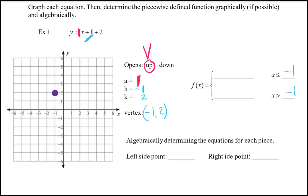Now let's graph this. My a value is one, so I'll have two slopes: positive one on the right and negative one on the left. On the right-hand side I go up one, over one, and plot those dots. Because an absolute value graph is symmetrical, I use the same movement on the other side — up one, left one, repeatedly — and then connect the dots to draw a nice straight V-shape, not a U, because a U would be a parabola.